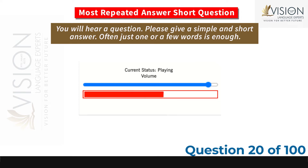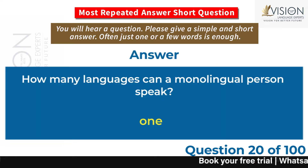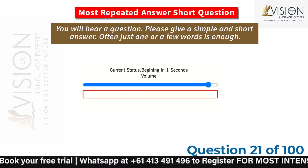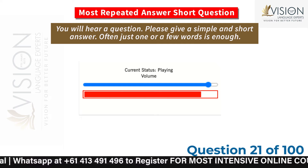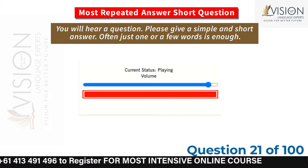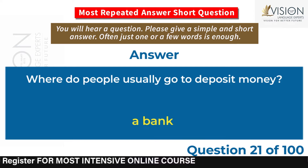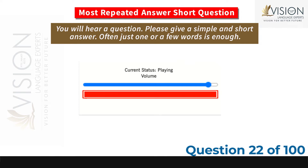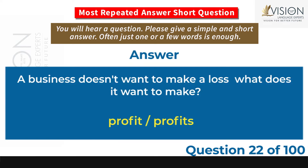How many languages can a monolingual person speak? One. Where do people usually go to deposit money? A bank. A business doesn't want to make a loss. What does it want to make? Profit.